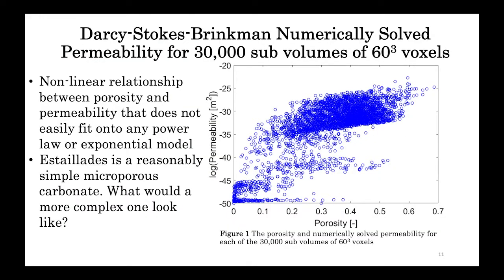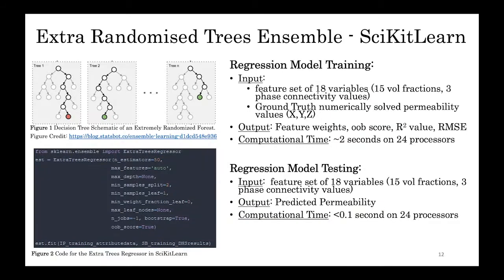So without doing any machine learning yet, already the story is getting interesting. This is not the clustering line we would expect for a model with an easily understood porosity-permeability relationship. Notice how the permeability can span several orders of magnitude for a single porosity value.